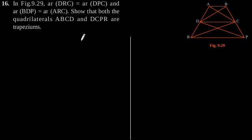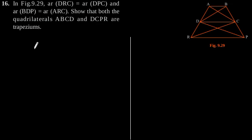Exercise 9.3, question number 16. In figure 9.29, area of triangle DRC is equal to area of triangle DPC, and area of triangle BDP is equal to area of triangle ARC. We need to show that both quadrilateral ABCD and DCPR are trapeziums.